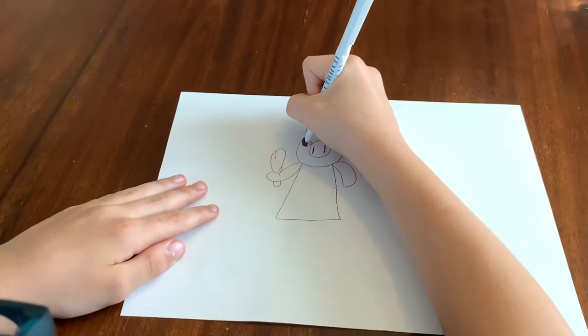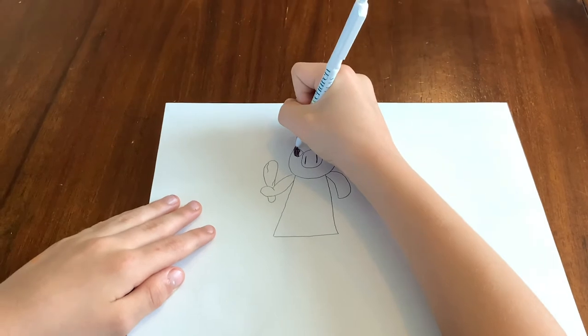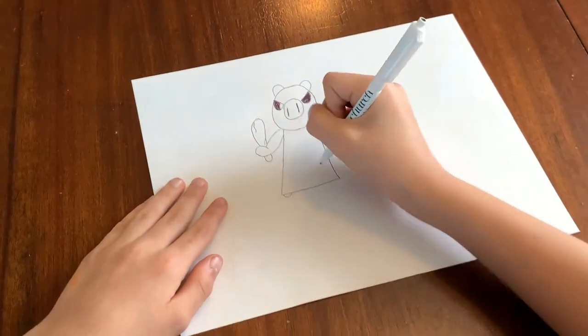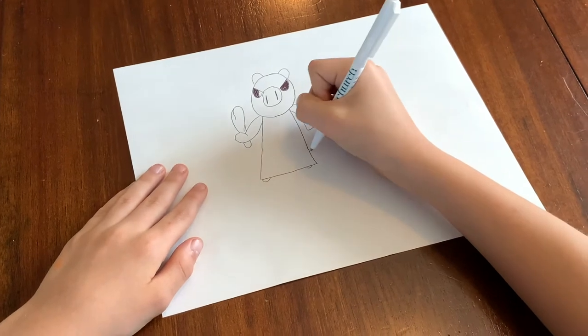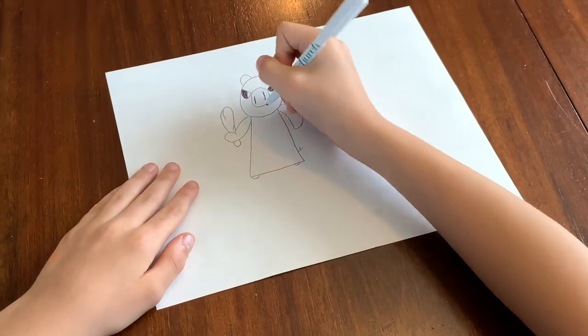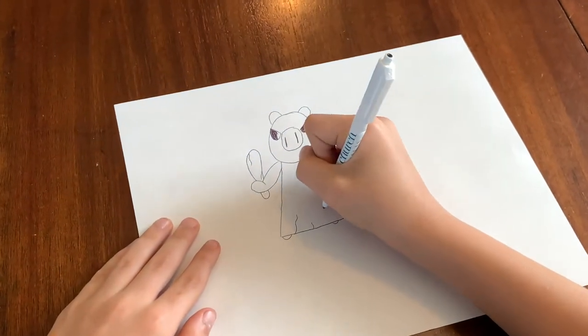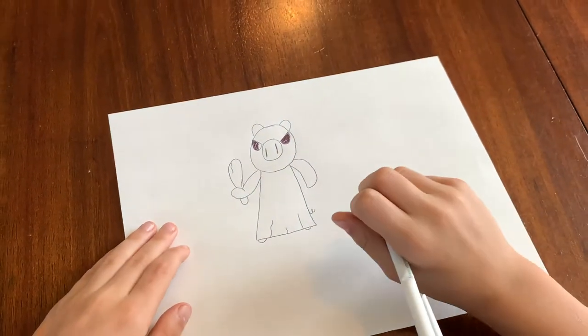Not all the way, so room for the pupil there. And then we need her little feet there poking out, make a tail, and then we need little dress marks there. All right, now all we need to do is color it.